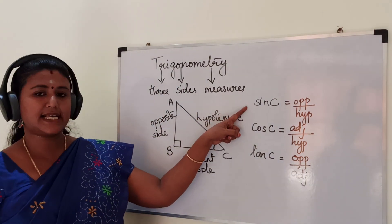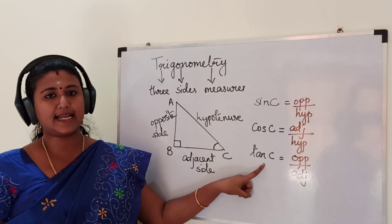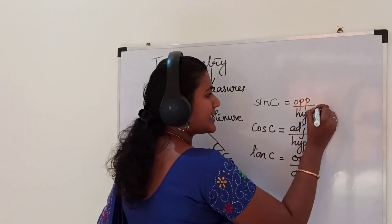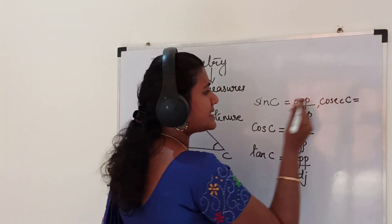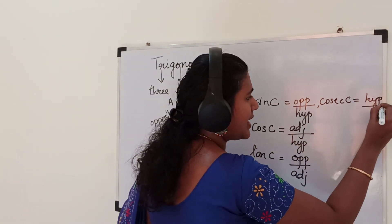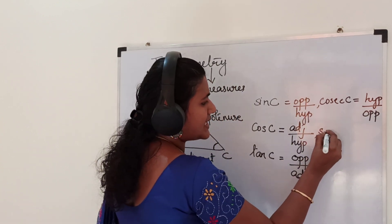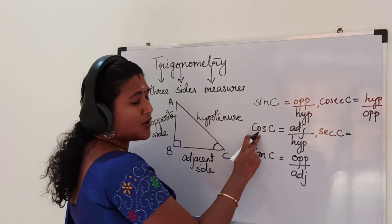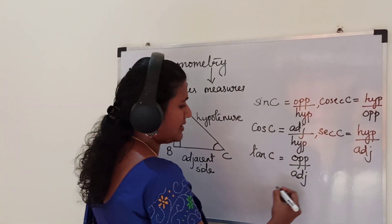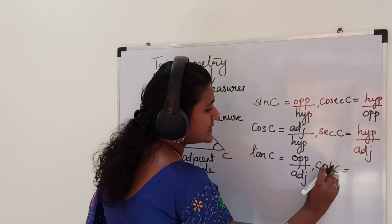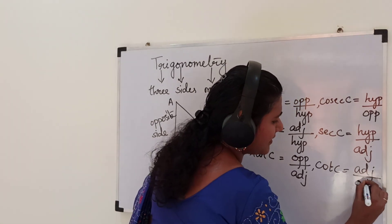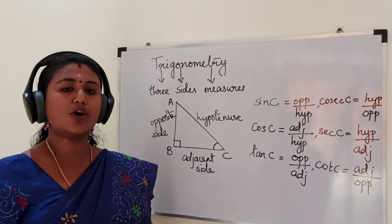The three trigonometric ratios sin C, cos C, and tan C. The next three ratios are the reciprocals of these. Cosec C is the reciprocal of sin, so the ratio is hypotenuse by opposite side. Sec C is the reciprocal of cos, so the ratio is hypotenuse by adjacent side. And cot C is the reciprocal of tan, so the ratio is adjacent side by opposite side. These are the six trigonometric ratios.